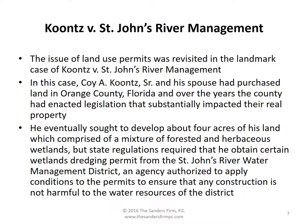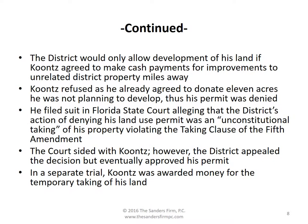The issue of land use permits was revisited in the landmark case of Coombs v. St. John's River Management. In this case, Coy A. Coombs Sr. and his spouse had purchased land in Orange County, Florida, and over the years the county had enacted legislation that substantially impacted their real property. He eventually sought to develop about four acres of his land, which comprised a mixture of forested and herbaceous wetlands. State regulations required that he obtain a wetlands dredging permit from the St. John's River Water Management District, an agency authorized to apply conditions to permits to ensure that any construction is not harmful to the water resources of the district.